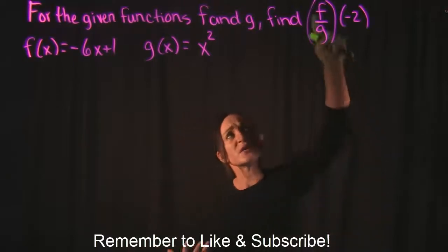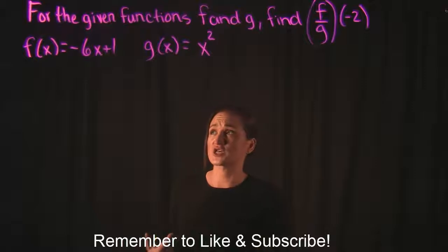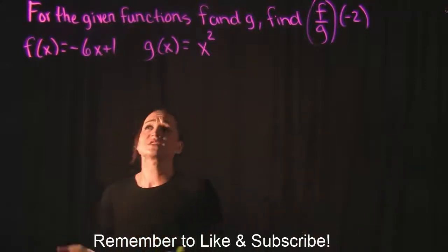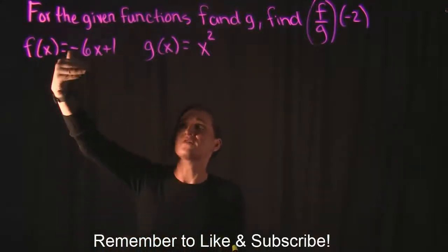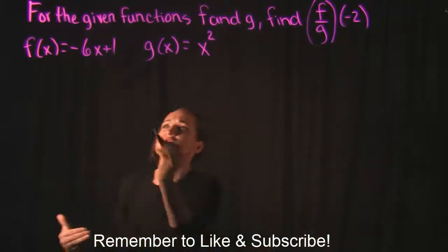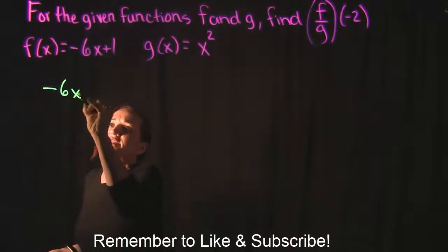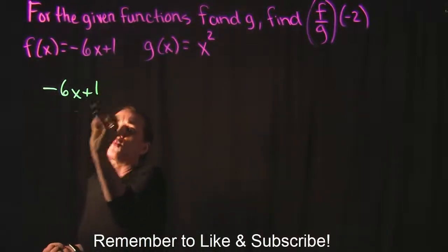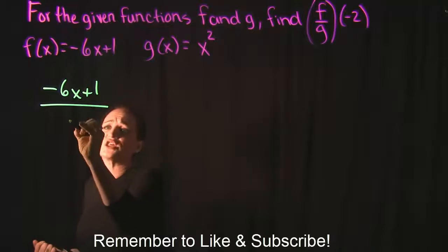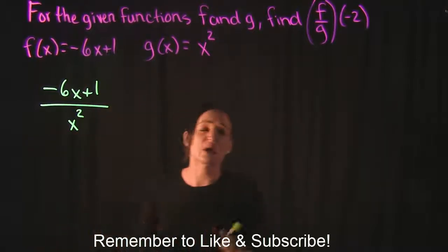What they want us to do is divide these two functions together, so they want us to take f of x and divide it by g of x. That would look like negative 6x plus 1 divided by g of x, which is x squared.